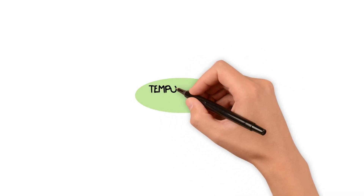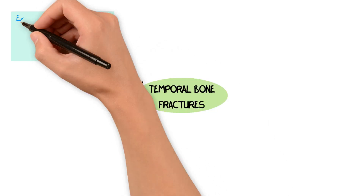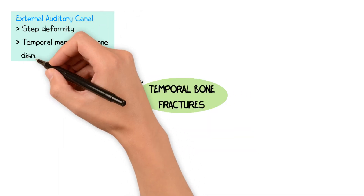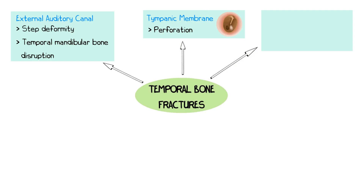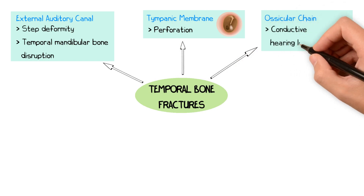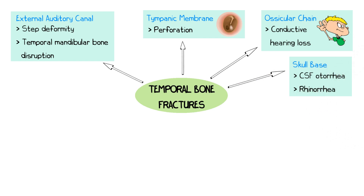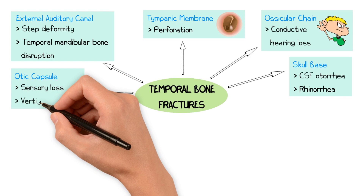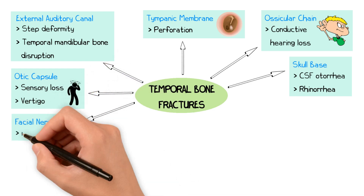Temporal bone fractures can affect various important structures in and around the temporal bone. Within the temporal bone, it can affect the external auditory canal causing a step deformity and temporomandibular joint disruption. It may affect the tympanic membrane resulting in perforation, or the ossicular chain causing a conductive hearing loss. It may injure the skull base resulting in CSF otorrhea or rhinorrhea. It can damage the otic capsule causing sensorineural hearing loss and vertigo, or it may affect the facial nerve resulting in facial paralysis.